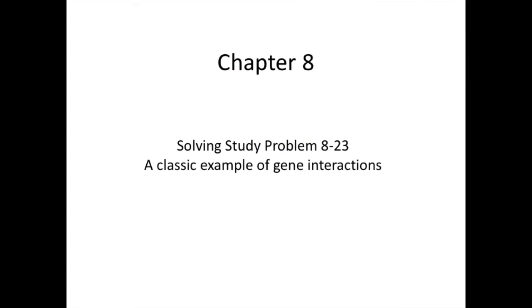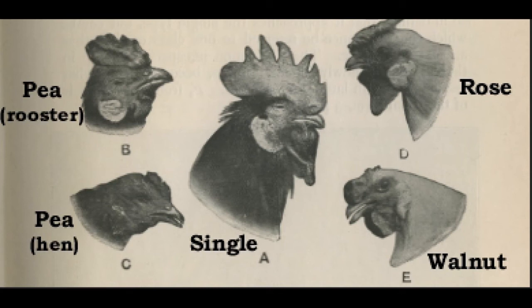Study Problem 8-23, a classic example of gene interactions. One of the earliest examples of gene interactions was found by the British geneticists Bateson and Punnett more than a century ago.